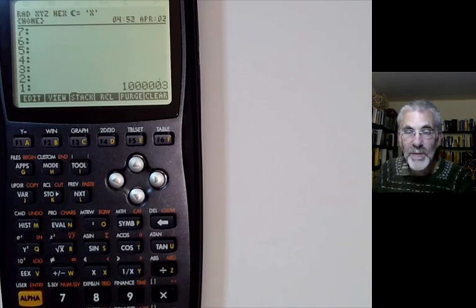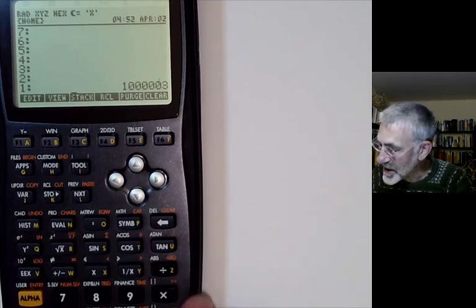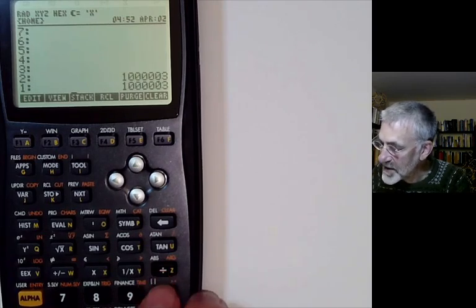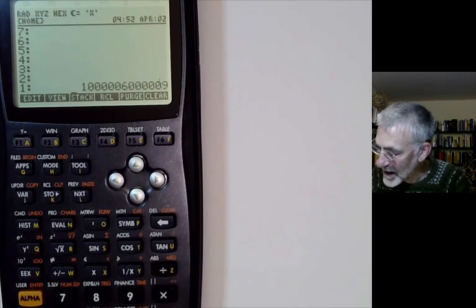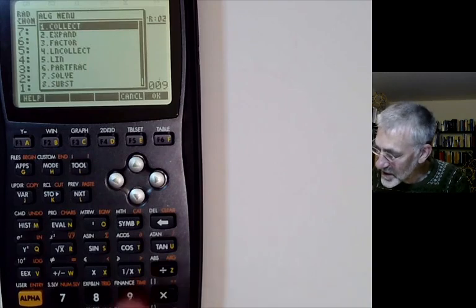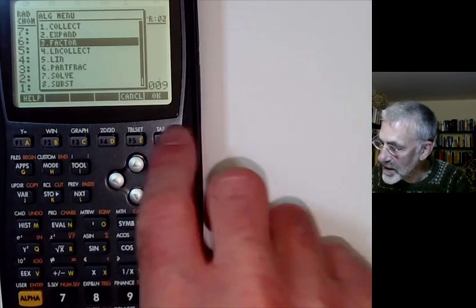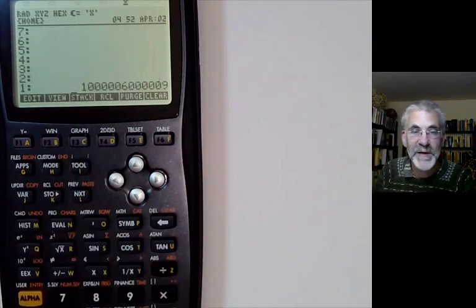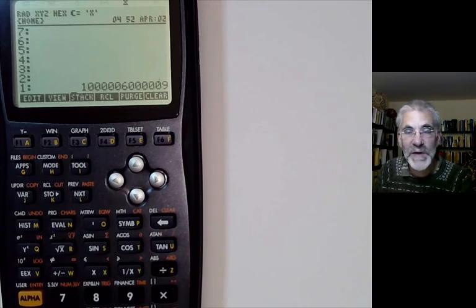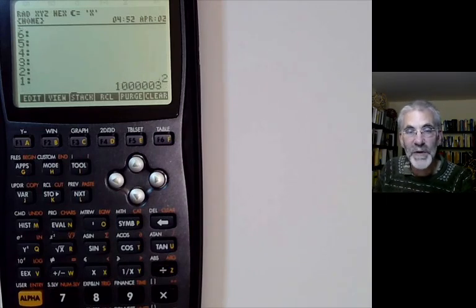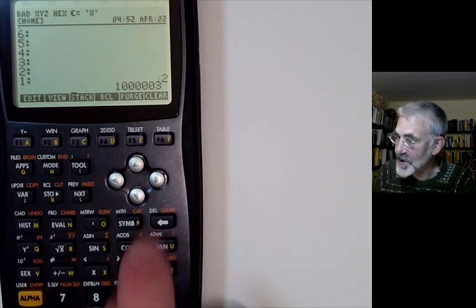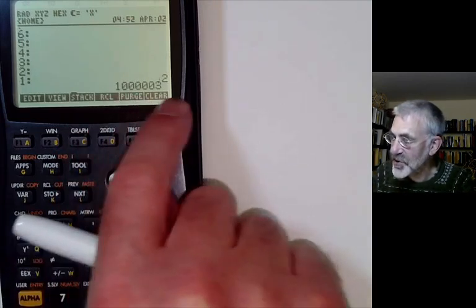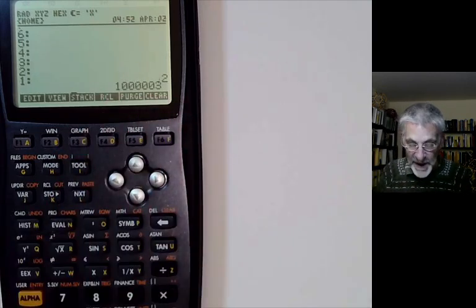It's also got a more powerful factorisation routine. Let's try squaring this, and then we'll try factoring it. So there's the factor button. So we factor this number, which you notice is more than 10 to the 12. So it's working to more than 12 significant figures precision. And there you see, after a few seconds, it's actually found the factor of a million and three.